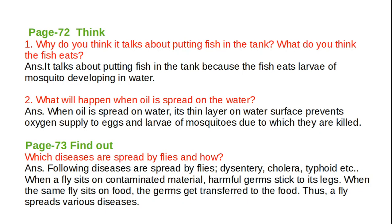In the last class, see here page number 72. What do you think it talks about putting fish in the tank? What do you think the fish is? You already know about this. In the deep water, one sees wells. So definitely we observe something in the water. What is that? So that is called green algae.